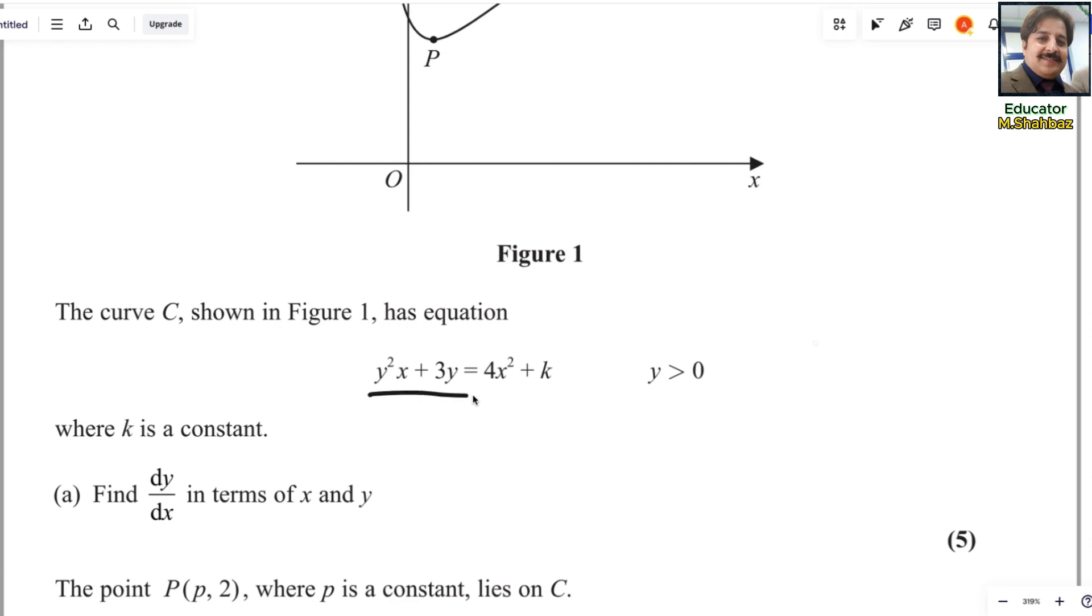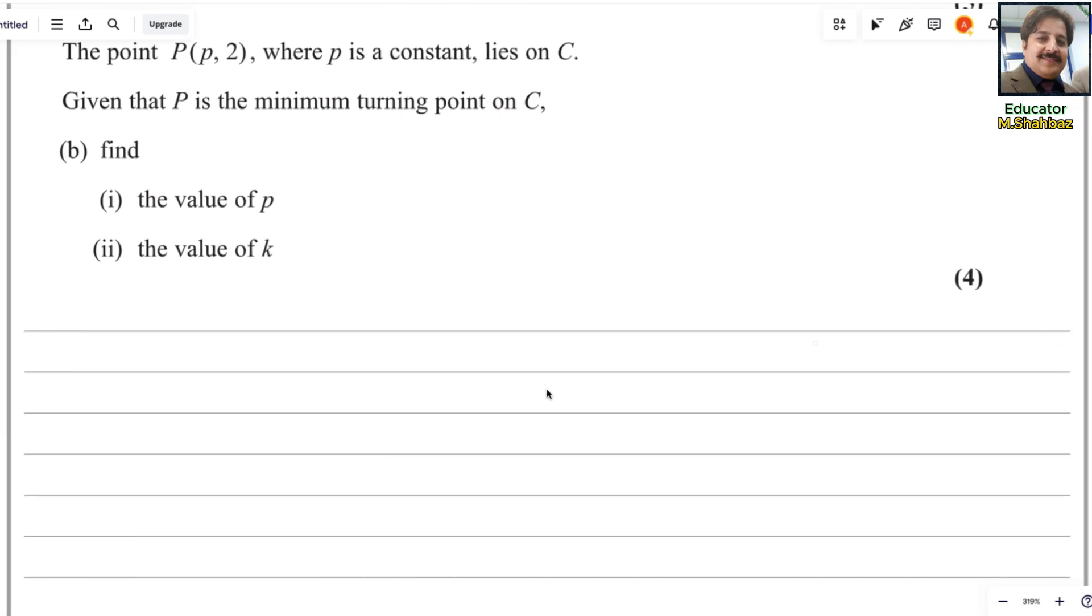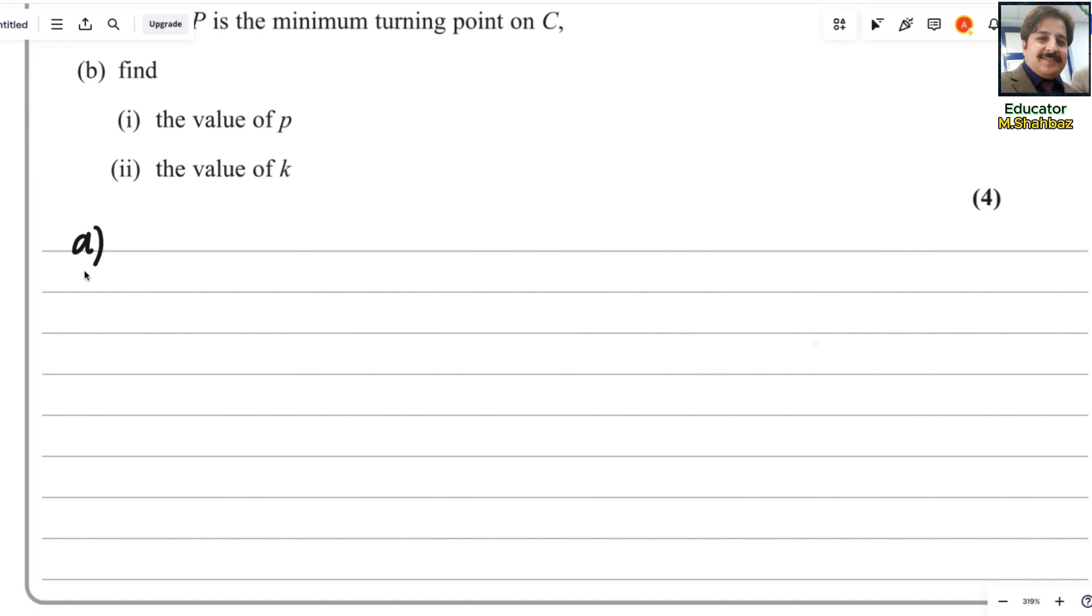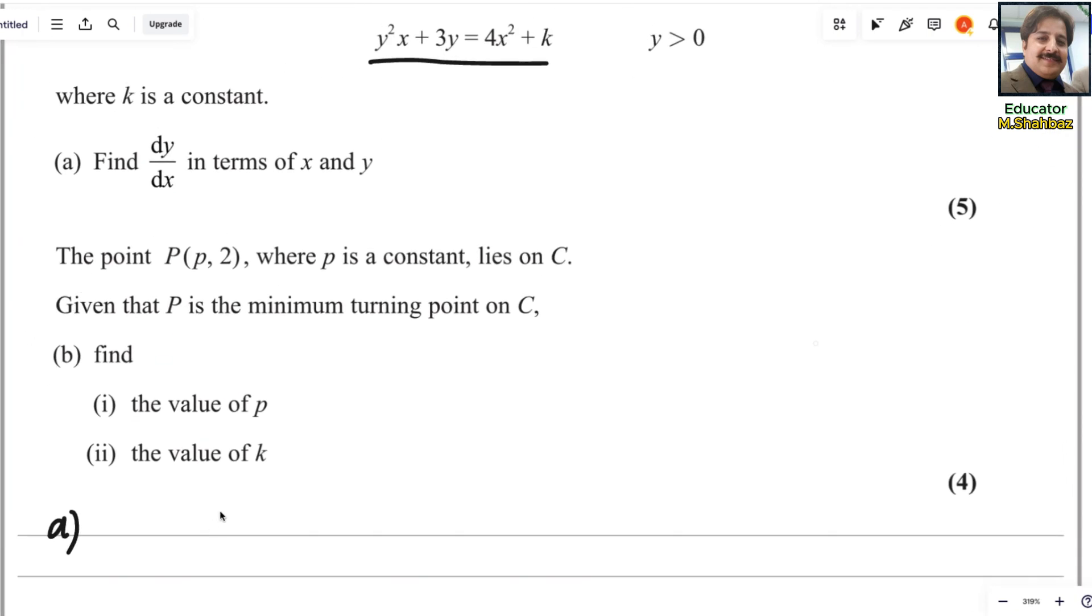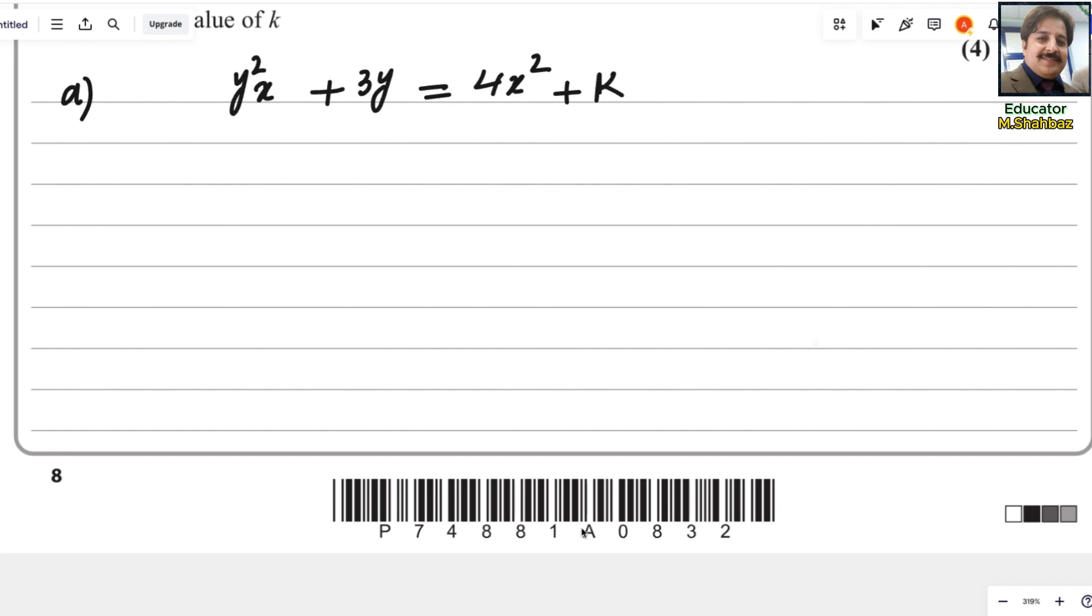We will differentiate this function with respect to x. Let us start with this question. First part, that is y²x + 3y = 4x² + k. Here we will apply the product rule because two variables are multiplying. Here y² is the first function and x is the second function.